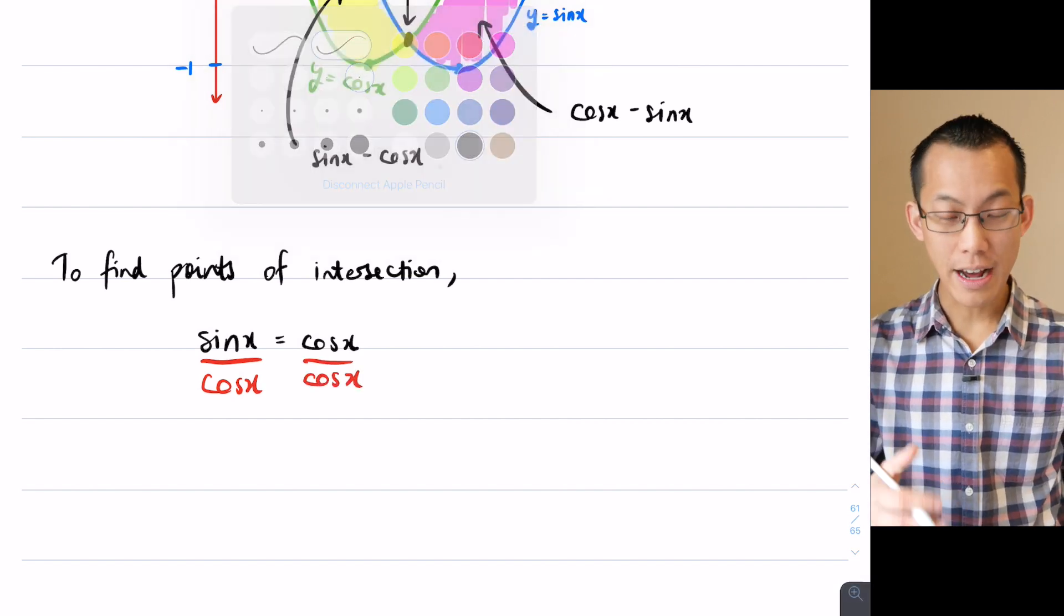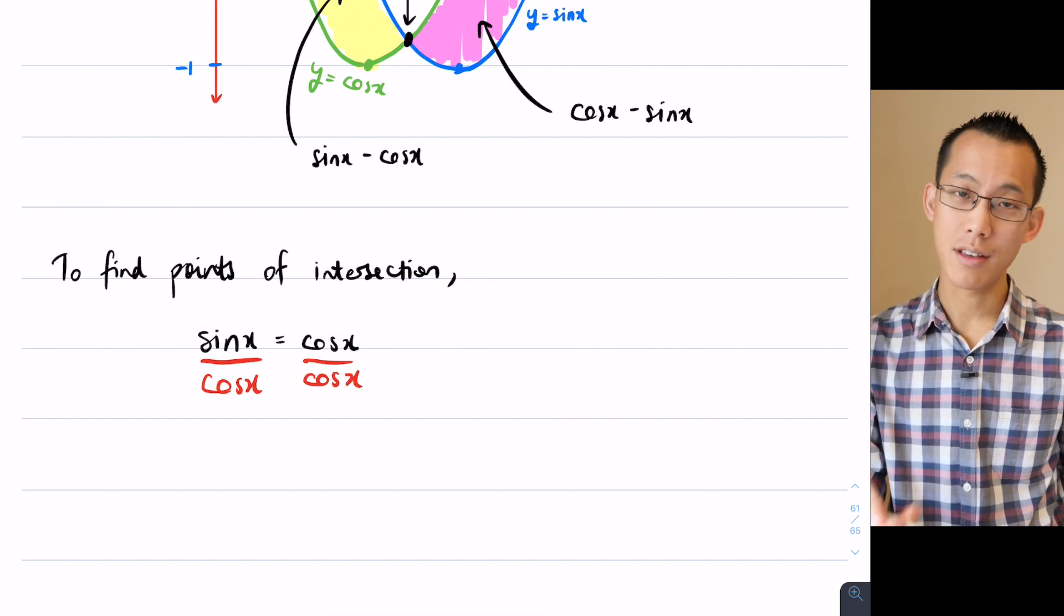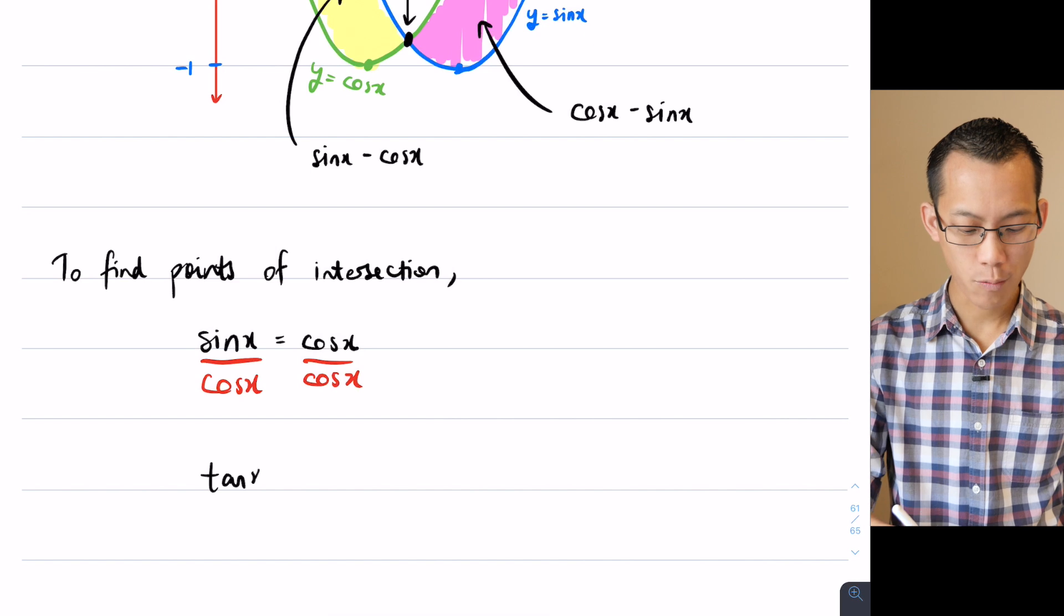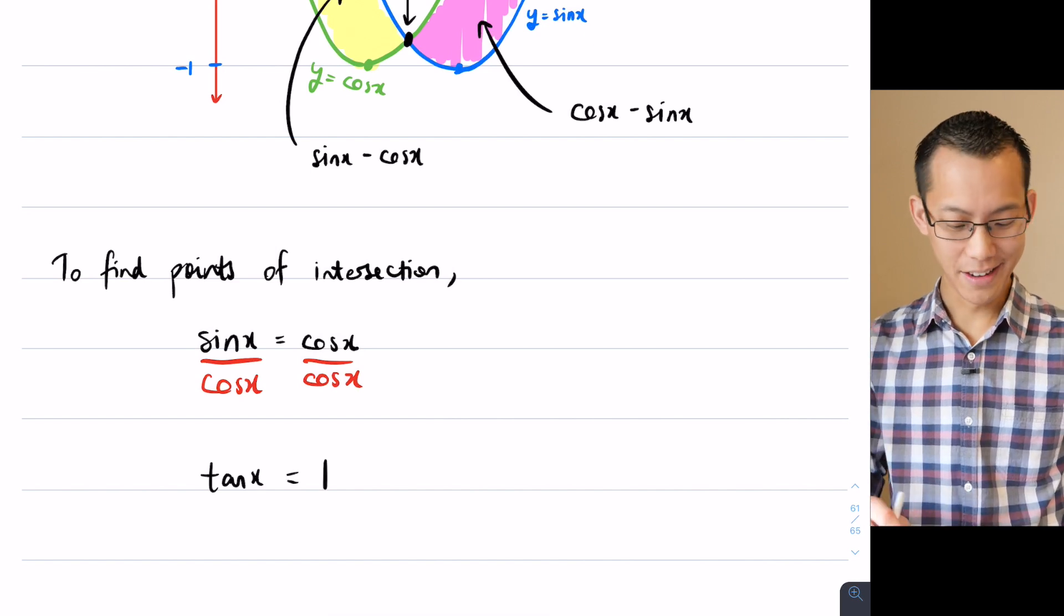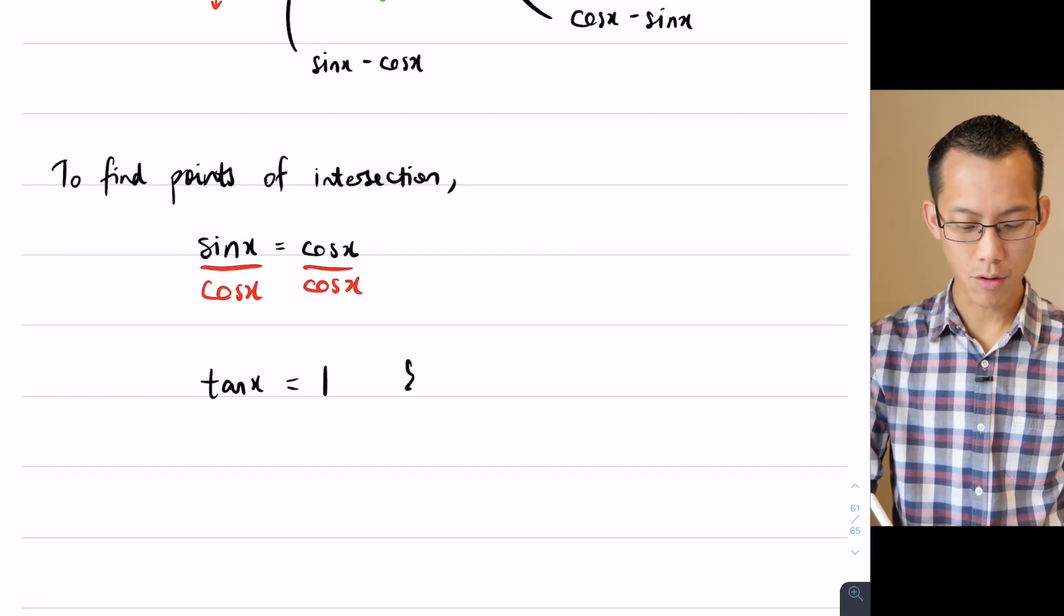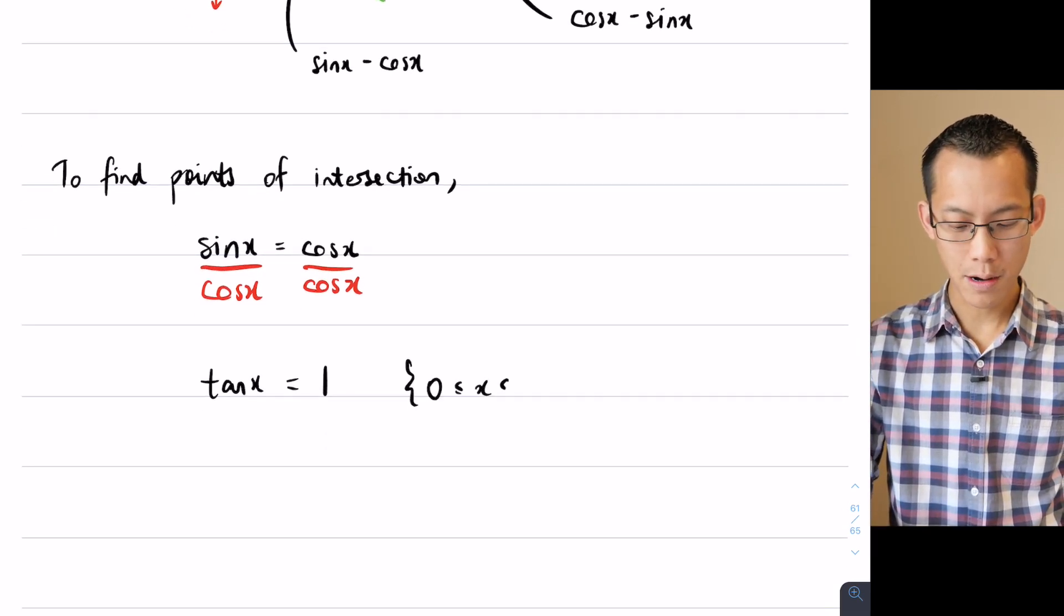Now when I do that, on the left hand side sine divided by cos by definition is tan, and on the right hand side I just get 1. Don't forget I'm solving this in a particular domain from 0 to 2π.